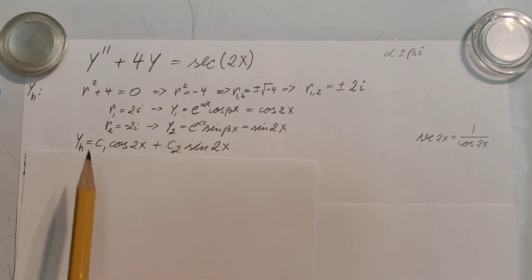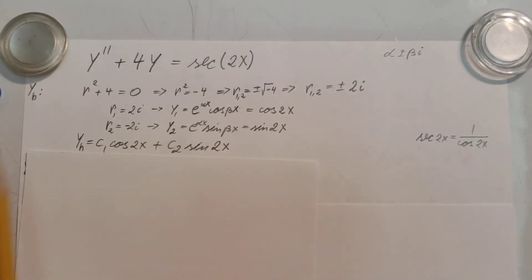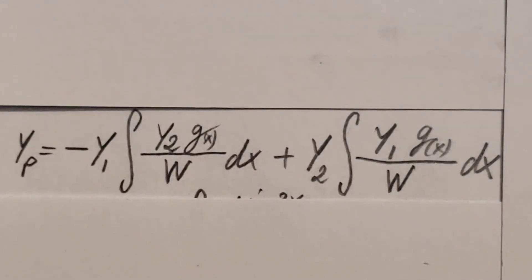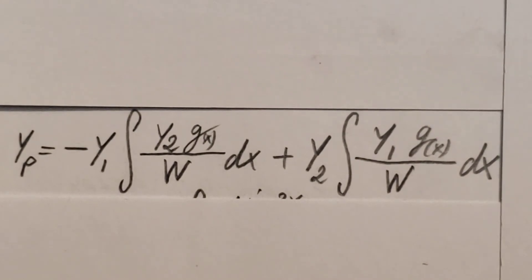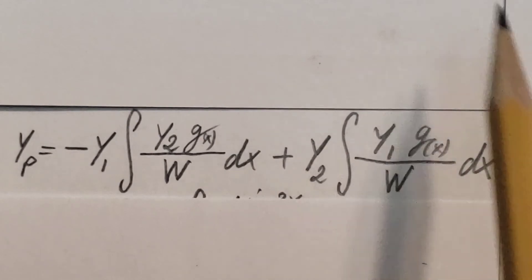Now to write up our homogeneous solution right here, simply take these two and plug them in, and don't forget about your constants: c1 times y1, which is cos(2x), plus c2 times y2, which is sin(2x). Now to solve for yp, I'm going to use the variation of parameters, and here's the formula for it.